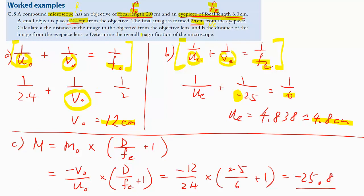With U_O, V_O, and V_E all known, you can obtain the final angular magnification. Since the final image is forming at 25 cm, this is the normal adjustment case, so you use the special-case equation. Substituting in, you get the answer, which is negative — very normal for a microscope because the image is inverted. Let's try the next question; pause the video now.